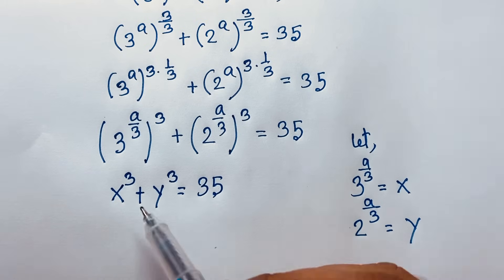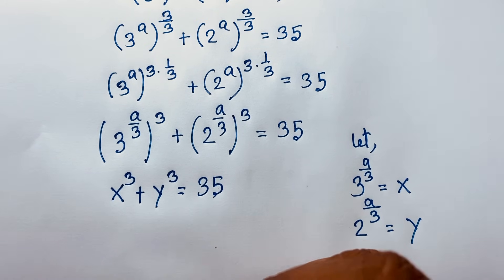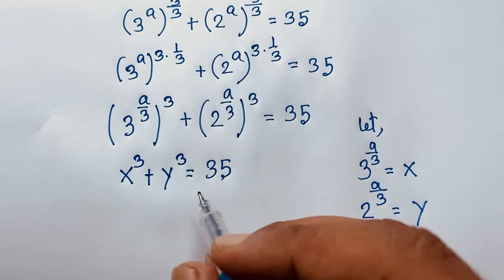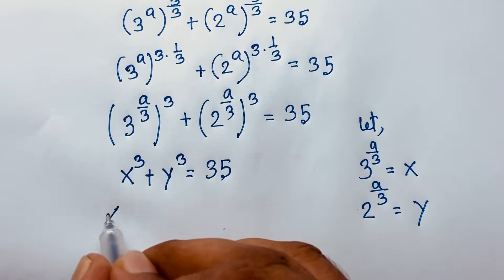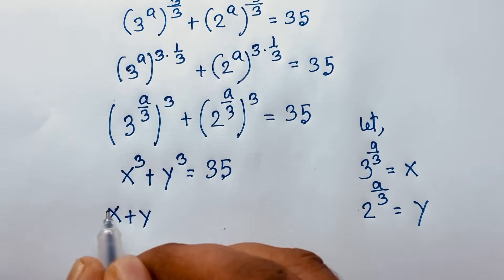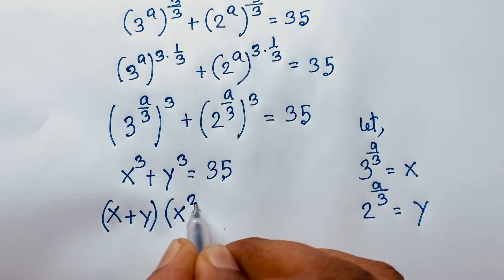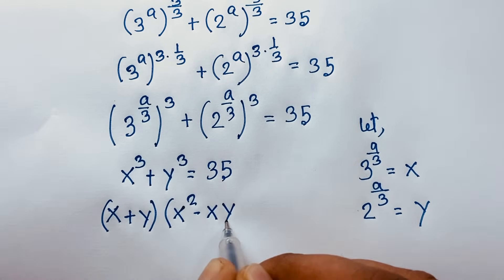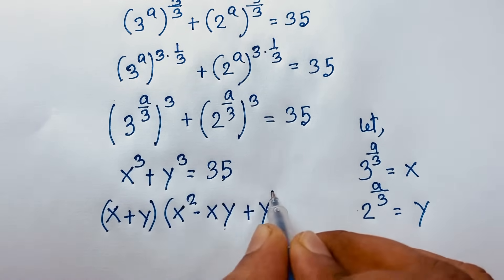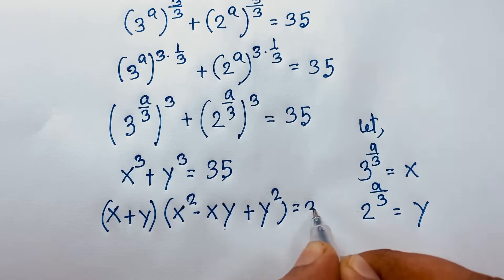Now we apply the sum of cubes identity: a cubed plus b cubed equals (a plus b)(a squared minus ab plus b squared). So x cubed plus y cubed equals (x plus y)(x squared minus xy plus y squared) equals 35.